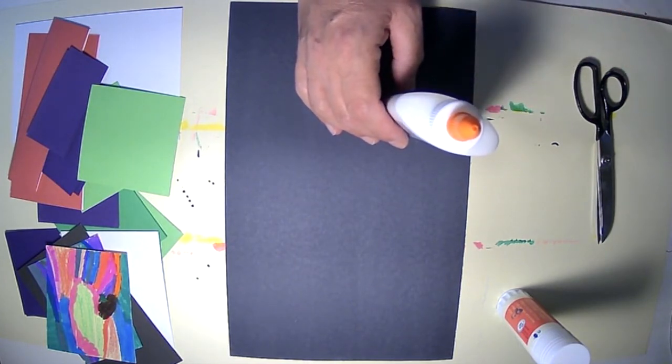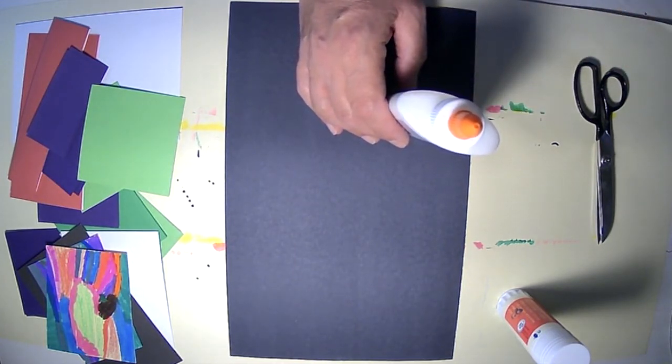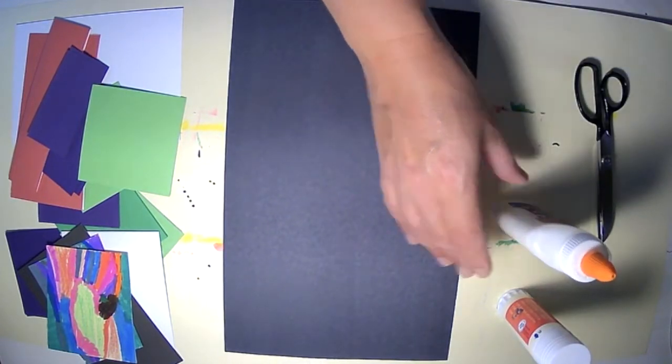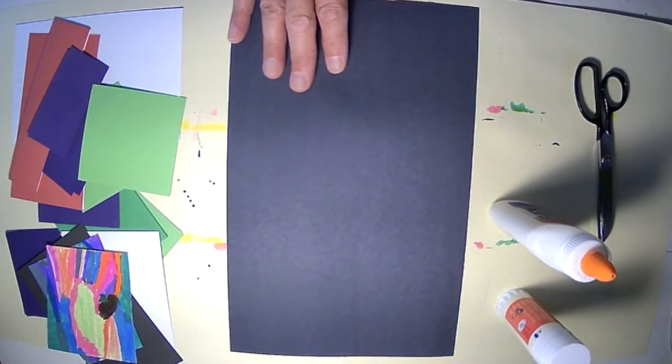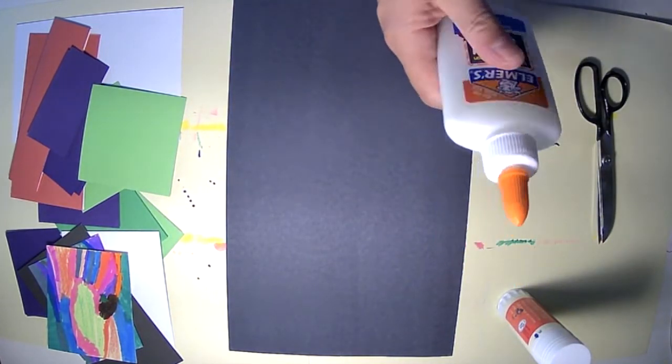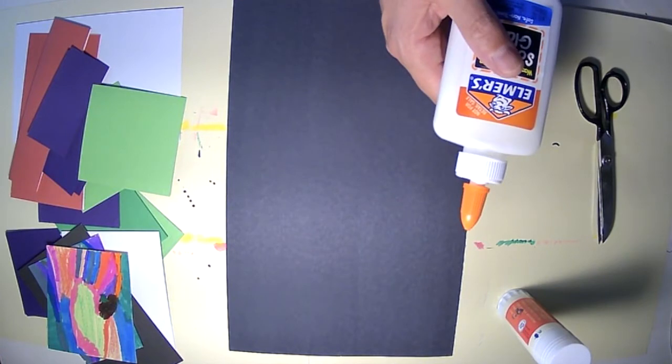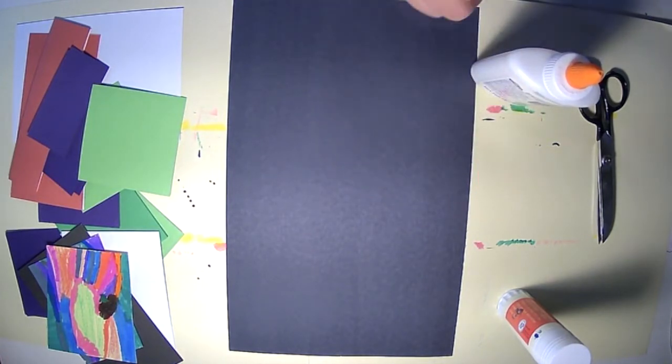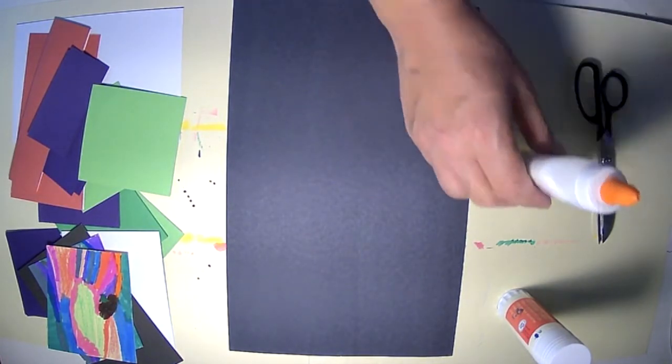One thing to know about gluing things together is you don't want to use too much glue. It ruins your paper. It becomes such a mess, becomes a pool. And when we're using liquid glue, we only use a few dots of the glue at a time. Otherwise, you really ruin your papers.